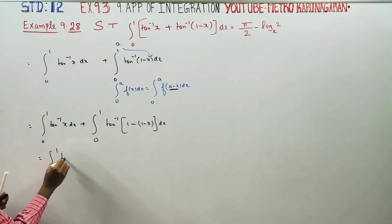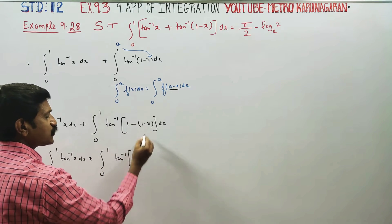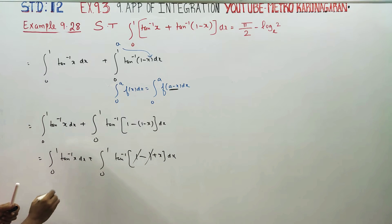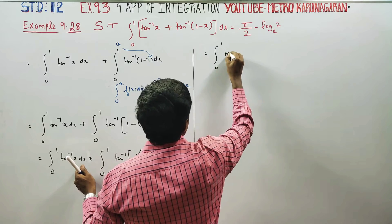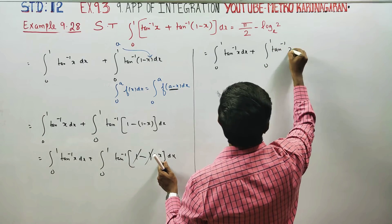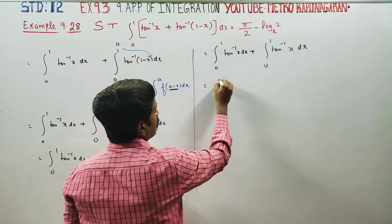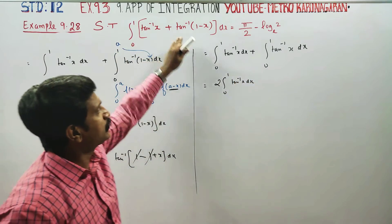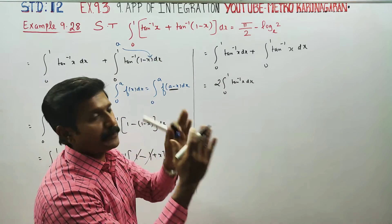The next stage: 0 to 1 of tan inverse of x dx, plus 0 to 1 of tan inverse of (1 minus x) dx. Since 1 minus x gives us the same integration, we combine the two terms into one term using this property. That's why integration combines the two terms into one.